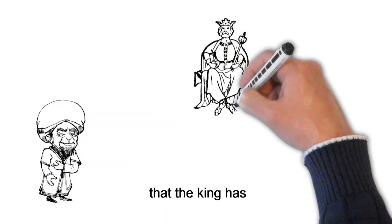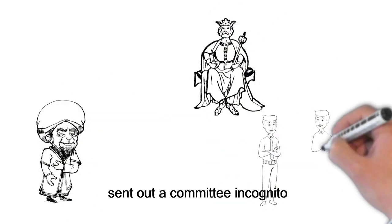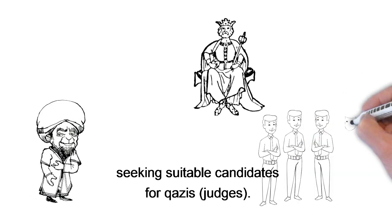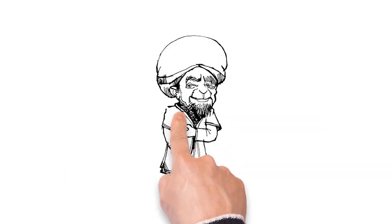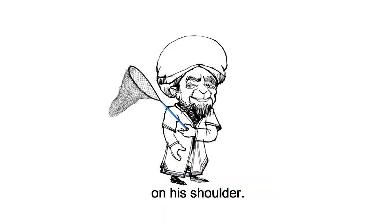Nasruddin heard that the king had sent out a committee incognito seeking suitable candidates for kazis. Nasruddin took to walking around, carrying an old fishing net on his shoulder.